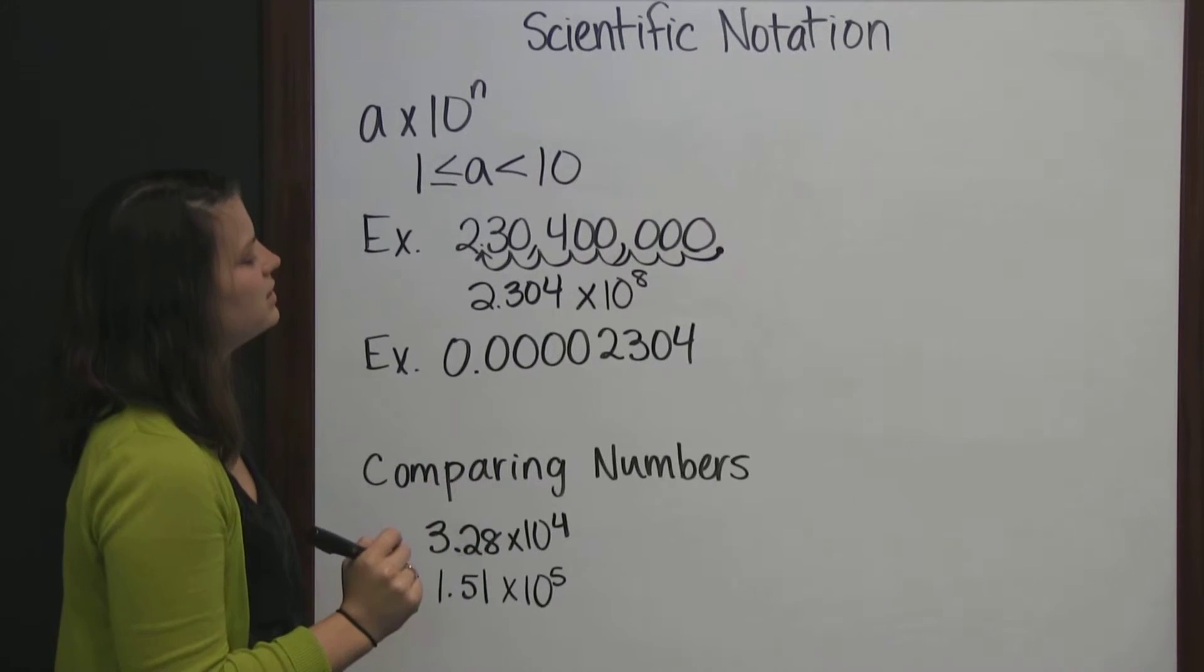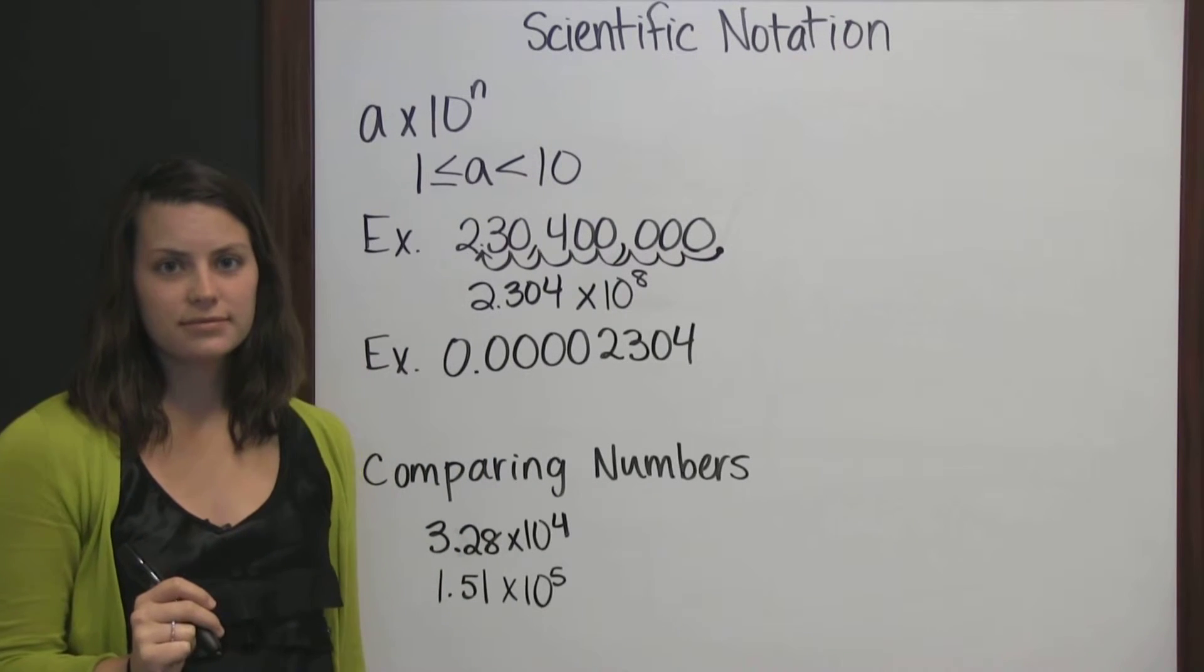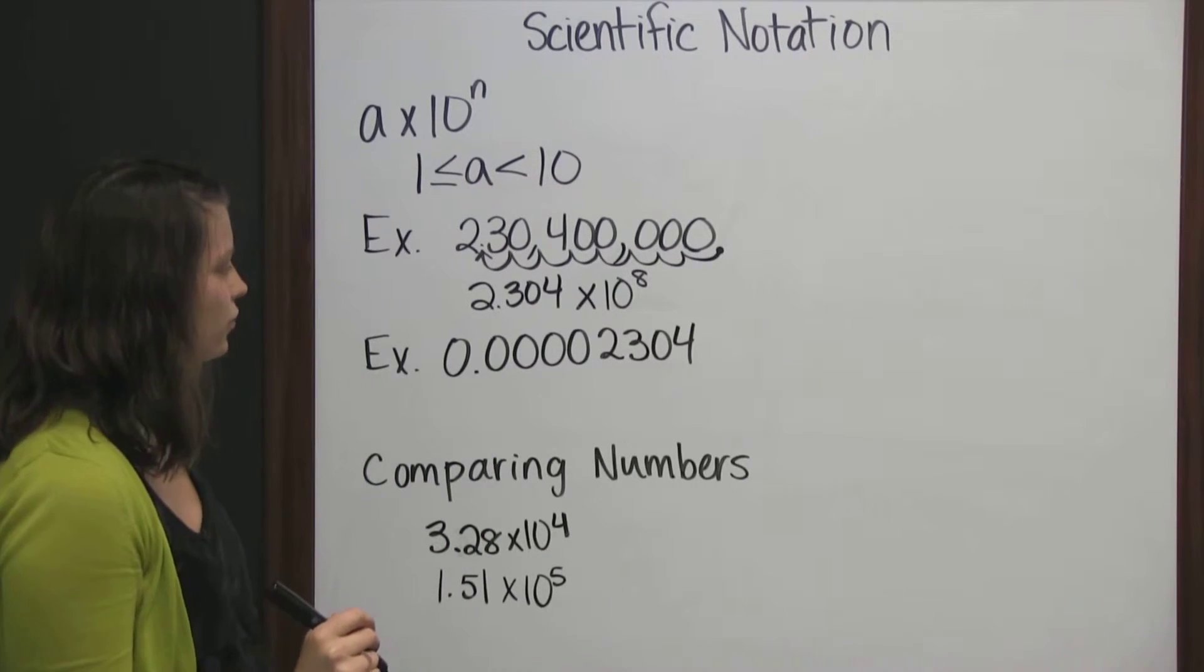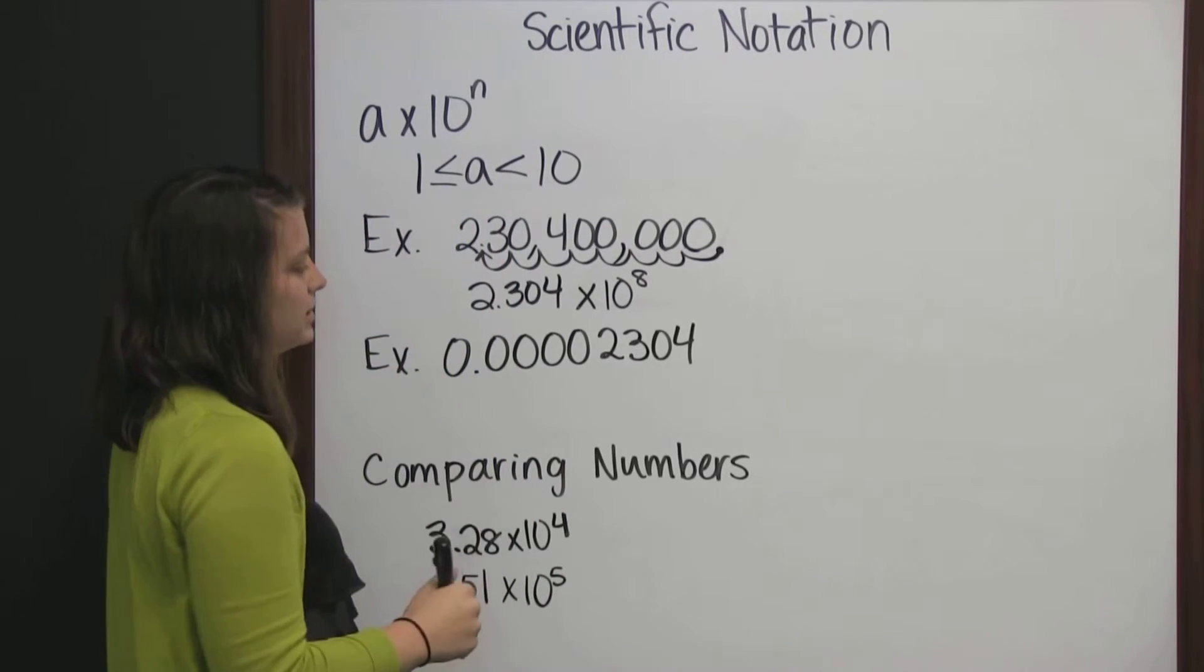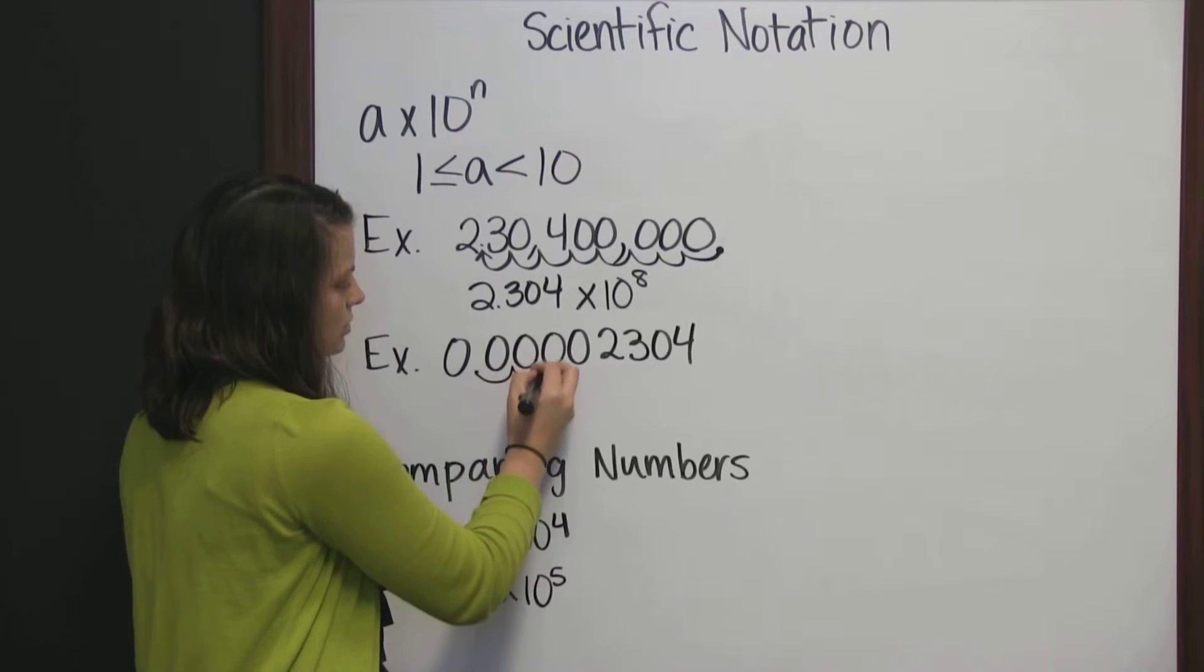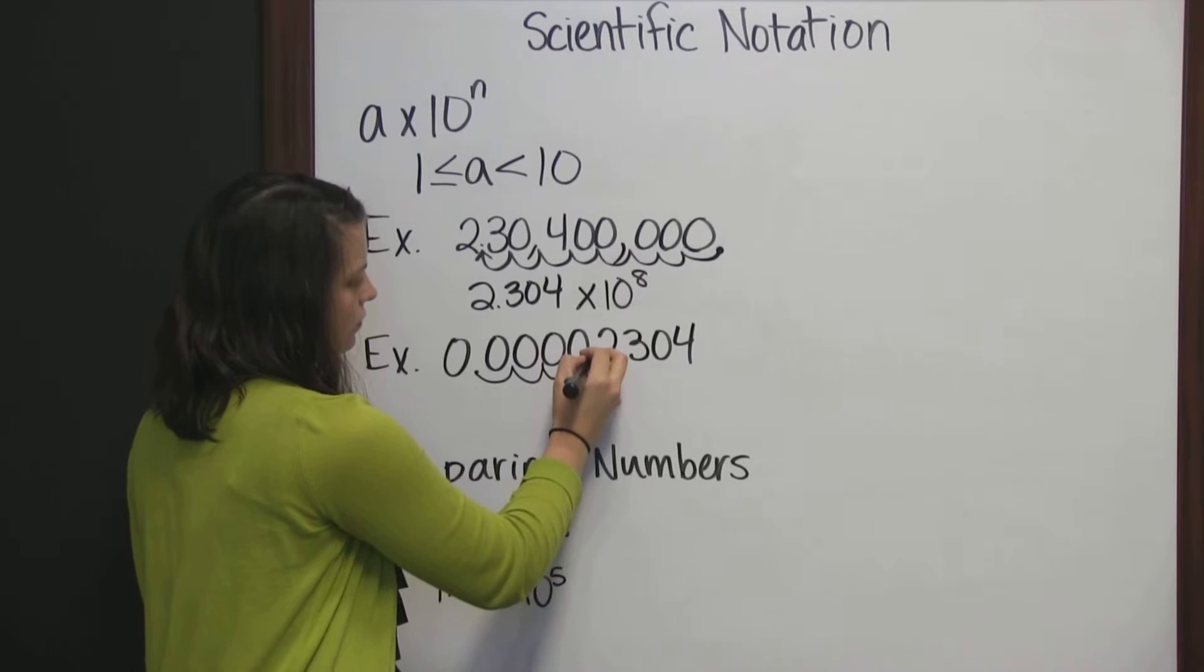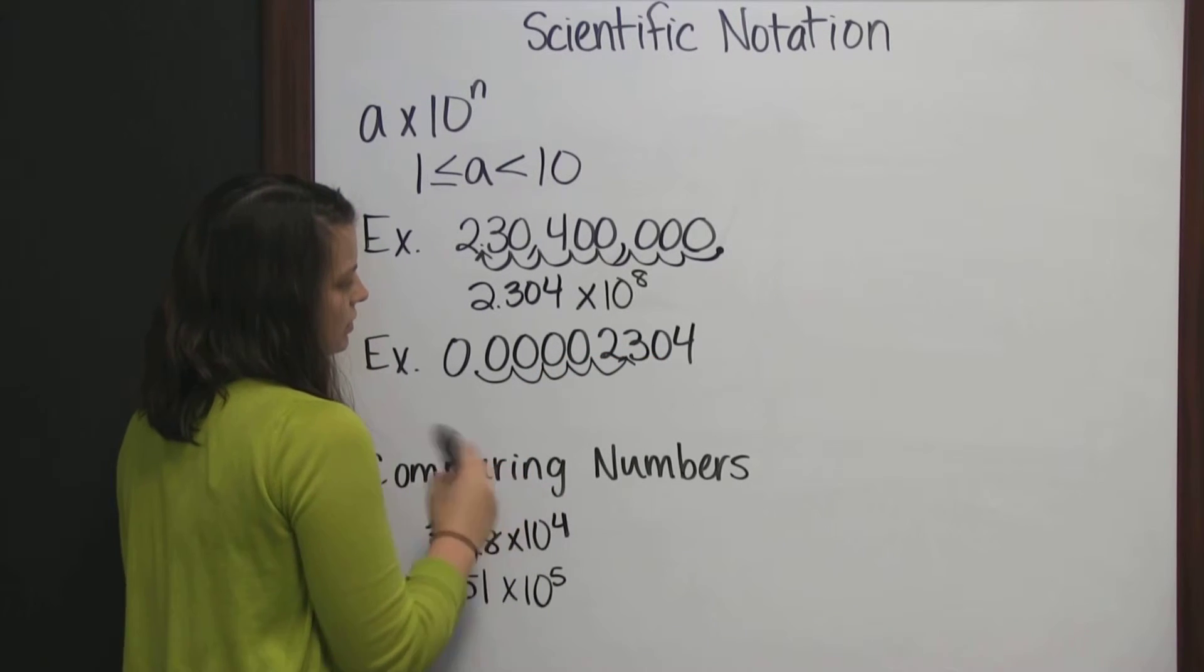We can also use scientific notation to take very large decimal numbers and write them in a shorter form. We do the same thing. Our a has to be greater than or equal to 1 and less than 10, which means we need to move our decimal 1, 2, 3, 4, 5 places to the right.